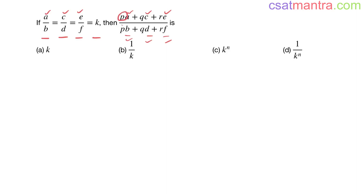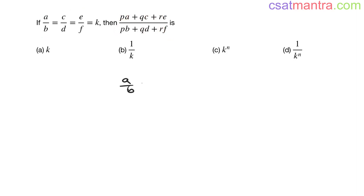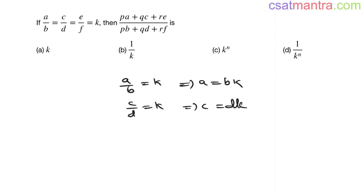p, q, r appear in both numerator and denominator. Since a/b = k, we get a = bk. Since c/d = k, we get c = dk. Since e/f = k, we get e = fk. Now substitute these into the expression.